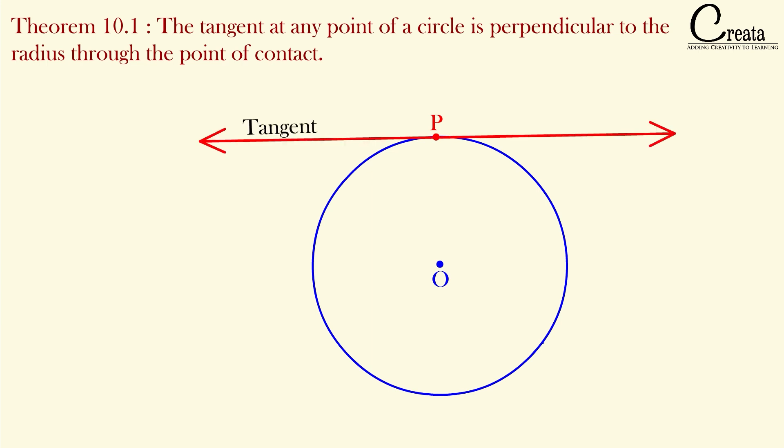Let's draw the tangent. This is the tangent. Further, let's join point P with the center point. It will form the radius OP. So this is the radius.